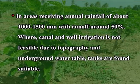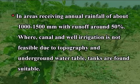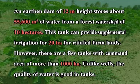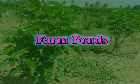The command area of many tanks ranges from 25 to 100 hectares. In areas receiving annual rainfall of about 1000 to 1500 millimetres with runoff around 50 percent, where canal and well irrigation is not feasible due to topography and underground water table, tanks are found suitable. A earthen dam of 12 metre height stores about 55,600 cubic metres of water from a forest watershed of 10 hectares, and can provide supplemental irrigation for 20 hectares of rainfed farmlands. There are also a few tanks with command areas of more than 1000 hectares. Farm ponds of size 100 to 300 cubic metres may be dug to store 30 percent of runoff, though the problem in red soils is high seepage loss.